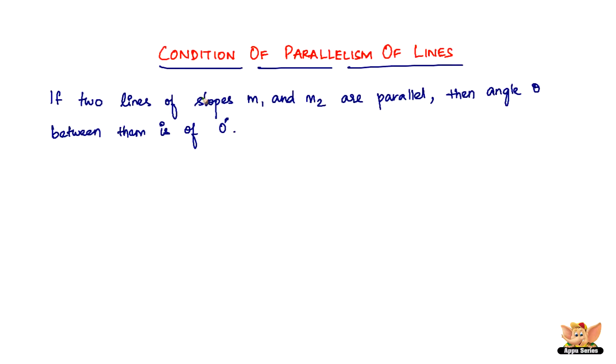Well, this statement is not very new to us. We know that if two lines are parallel to each other, then angle theta between them is 0 degrees. This statement just says that those two lines are going to have some slopes, M1 and M2.